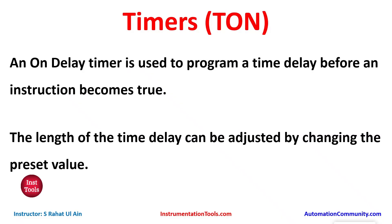An on-delay timer is used to program a time delay before an instruction becomes true. The length of the time delay can be adjusted by changing the preset value. For example, if the preset value is 5 seconds, when we turn on the input, the output will turn on after 5 seconds — so it delays before the instruction becomes true.